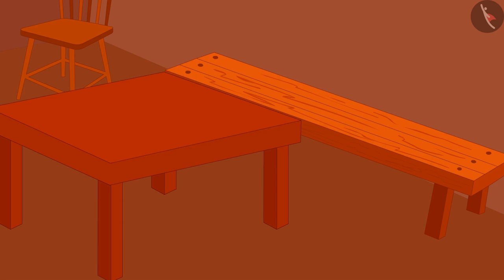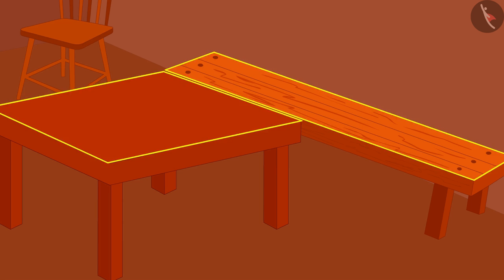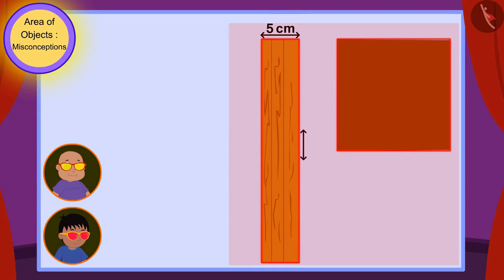Raju first looked at the top surfaces of both tables with his glasses and he could see the measure of the sides of both the tables like this.